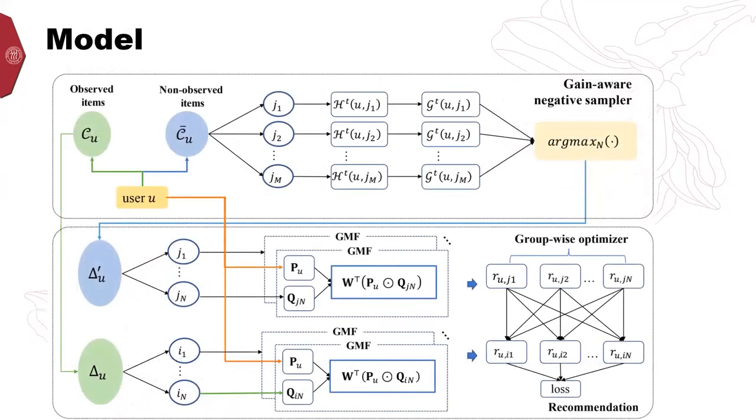Our proposed model is composed of the gain-aware negative sampler and group-wise optimizer. Especially, the gain-aware negative sampler aims to get the negative selection dynamically in training stages, which can effectively identify the false negative samples and further diminish the risk of introducing false negative instances.